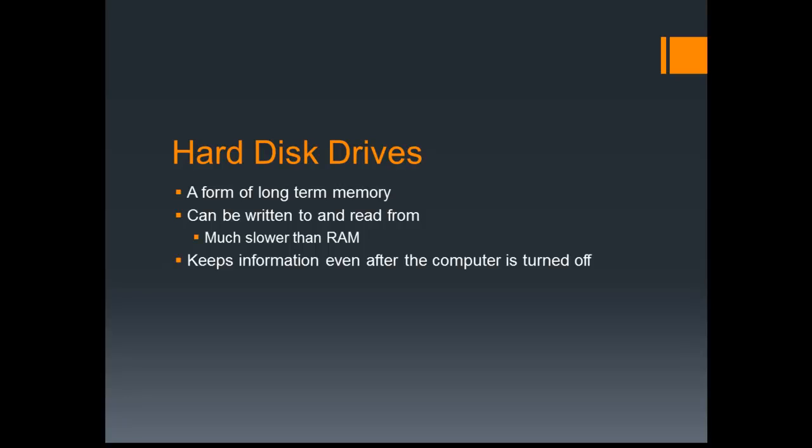Now, there are these interesting things called hard disk drives in your computer. They're a form of long-term memory, but they can also be written to and read from multiple times. The downside is that it's a lot slower than RAM to write to a hard disk drive, so the computer prefers to use RAM to flip-flop information in and out. If you were editing in Word and had to write to the hard drive every time you pressed a key, it would take hours just to write a sentence. Hard disk drives keep memory even after the computer is turned off, but they aren't fast enough to be used as the main memory of the computer.